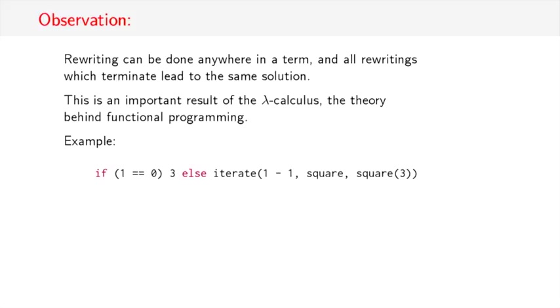One interesting observation here is that rewriting can be done anywhere in a term, and all rewritings that terminate would lead to the same solution. In fact, that's an important result of lambda calculus, which is the theory behind functional programming. So let's see that in an example. The first result of a reduction in our iterate example was this line here. If 1 equals 0, 3, else iterate 1 minus 1, square, square of 3.